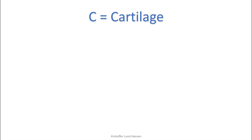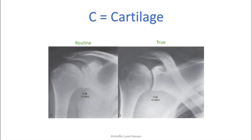C is for cartilage. Cartilage isn't actually visible on x-rays, but what we can see is the joint spaces where the cartilage is. Abnormally large spaces can indicate ligament damage, and narrow spaces typically indicate some sort of degenerative process, osteoarthritis being the best example. For the best examination a true AP view is necessary to evaluate the glenohumeral joint space, while the routine one is better for the acromioclavicular joint. In practice you won't use the true one too often, so learn how it looks on the routine one as a base.